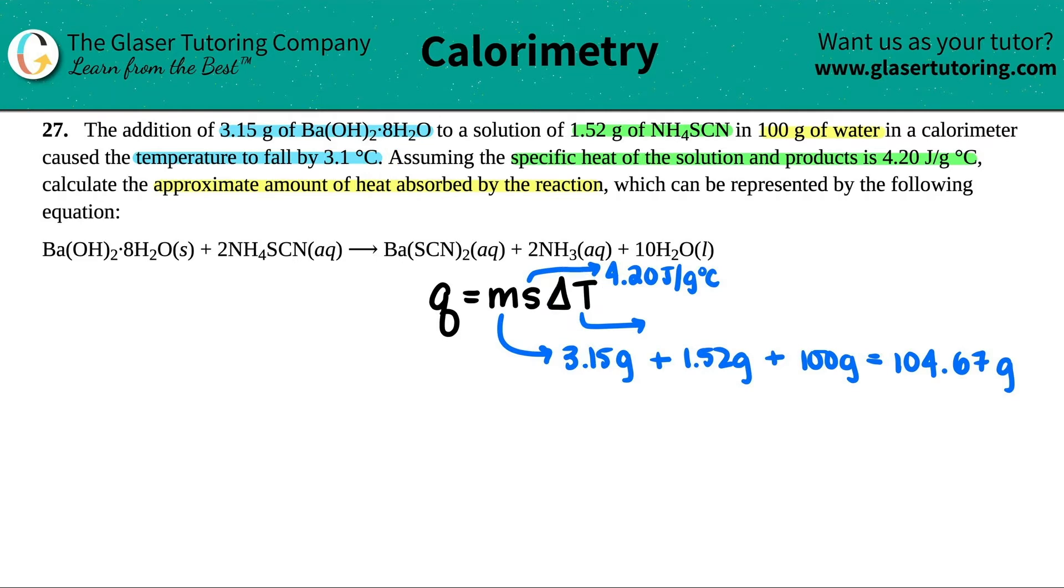So 3.1 is the delta T. Now the question is, is it positive or negative? When you're dropping in temperature, your delta T will be a negative value. So it should be negative 3.1 degrees Celsius.